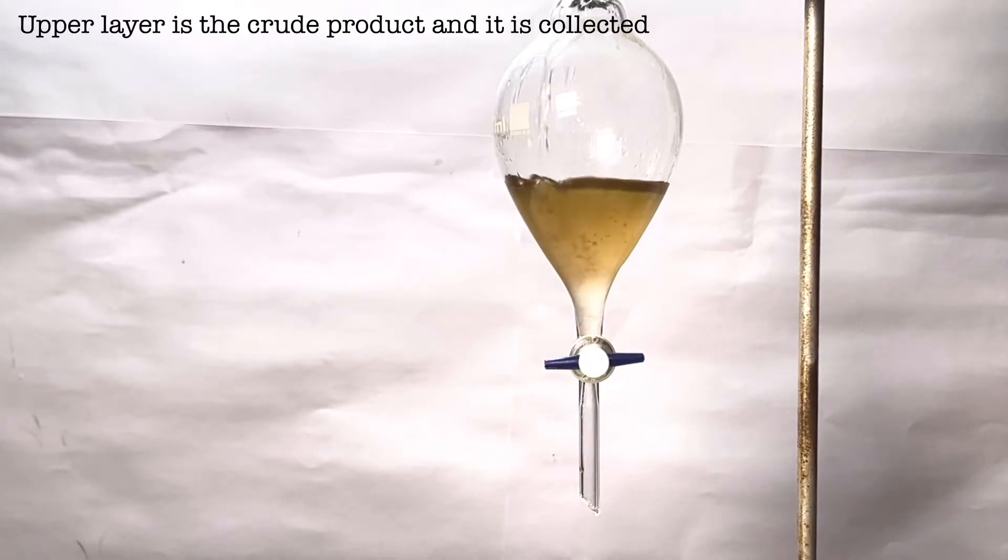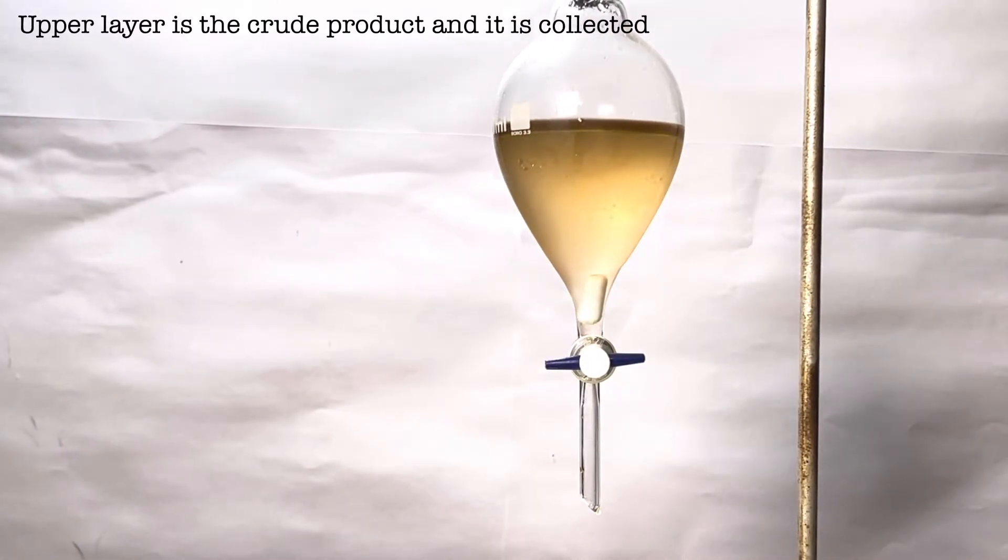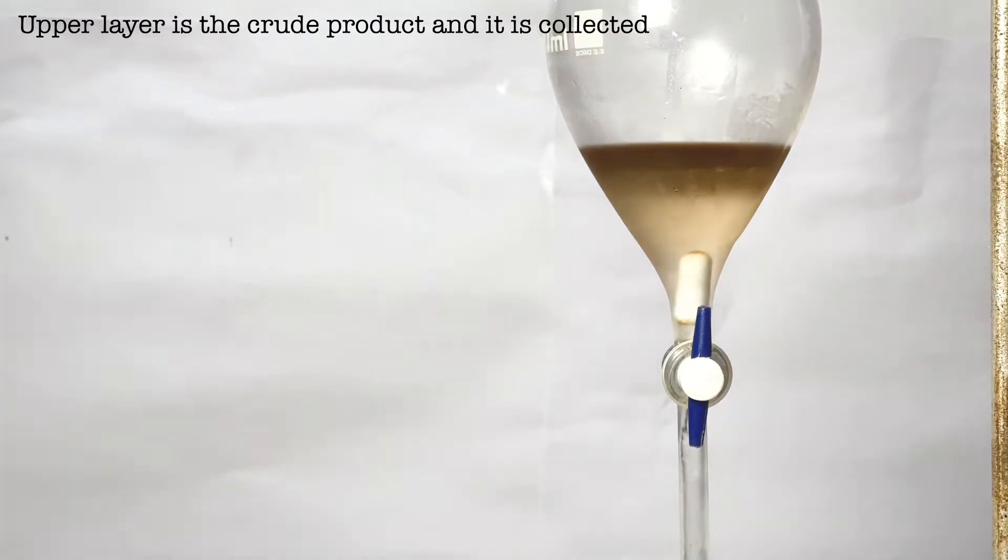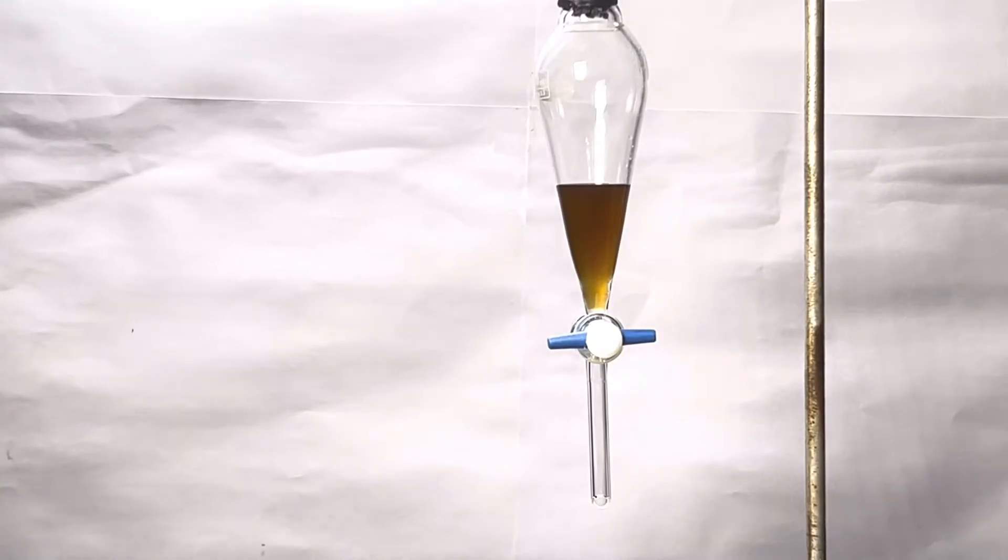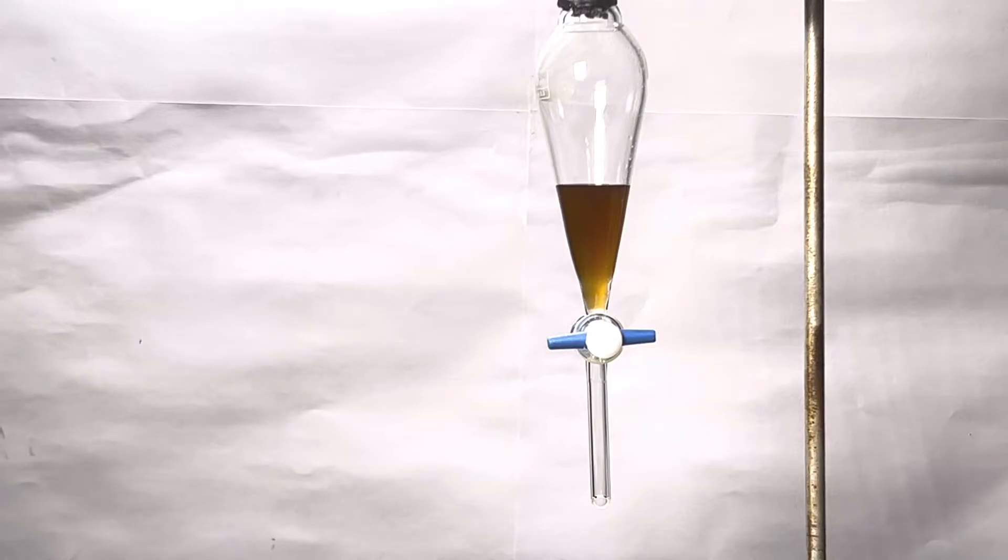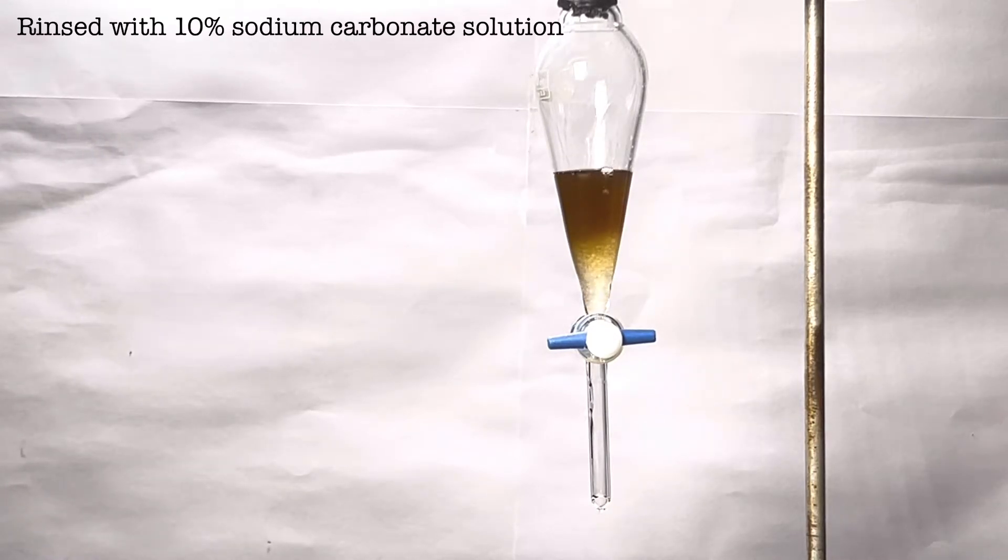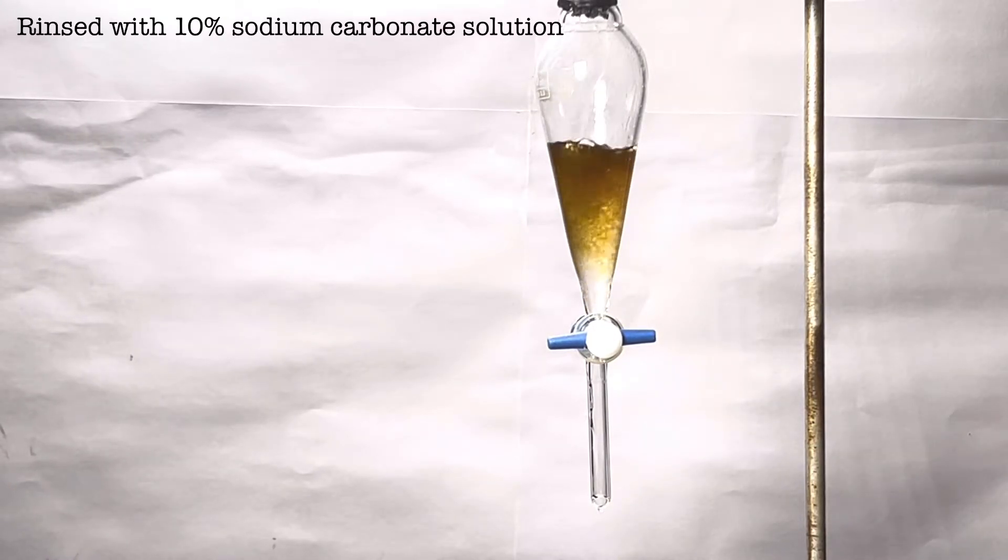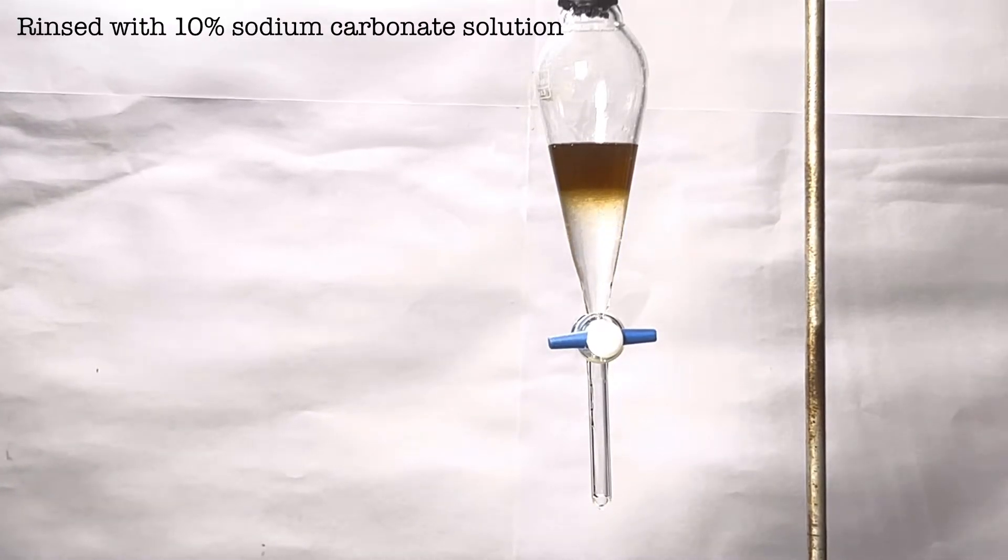The contents of the beaker was poured into a separatory funnel and the layers were allowed to separate. The upper layer was collected and transferred to a smaller separatory funnel. It was then rinsed with a 10% sodium carbonate solution and this would remove any excess acid present in it. A second washing with water was also given.